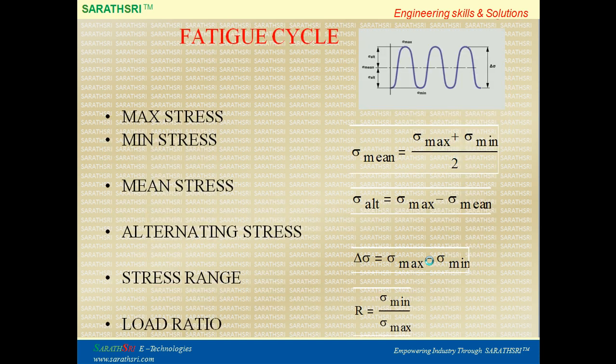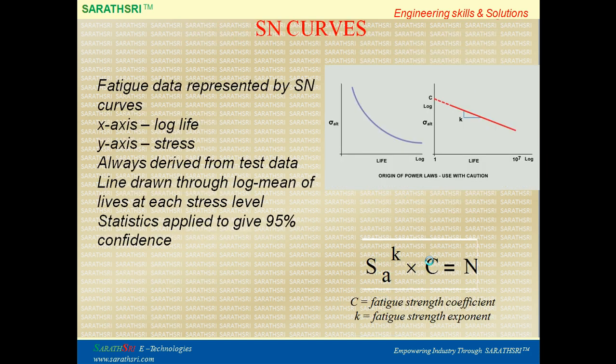Some basic terminologies of the fatigue cycle: maximum stress, minimum stress, alternating stress, stress ratio (R = sigma_min / sigma_max), and stress range. If sigma_max and sigma_min are known, these terminologies can be defined. To perform fatigue analysis, one of the essential elements is the stress-cycles curve, called the SN curve, which is the basis for estimating the fatigue life of a component. The X-axis represents logarithmic life in cycles and the Y-axis represents stress.